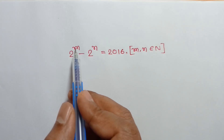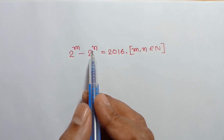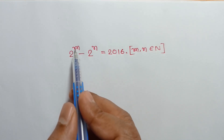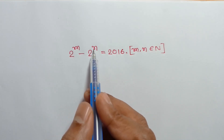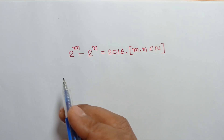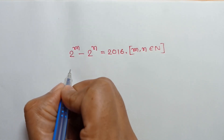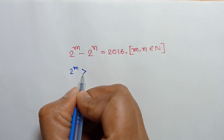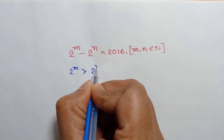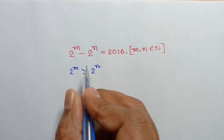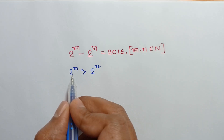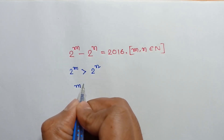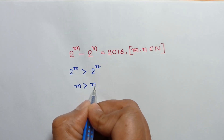Here, 2 to the power m minus 2 to the power n is a positive number. So, 2 to the power m is greater than 2 to the power n. Since the bases are the same, comparing the powers, we can write m is greater than n.